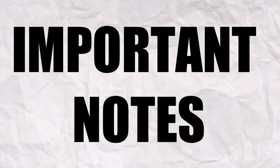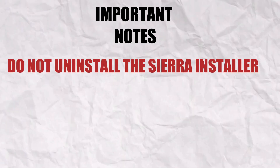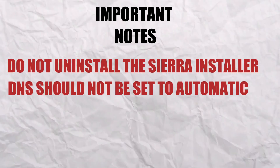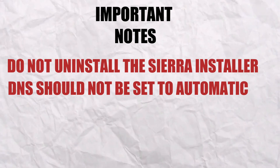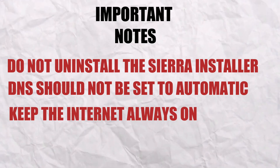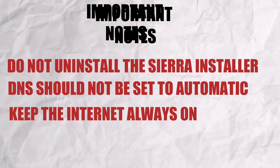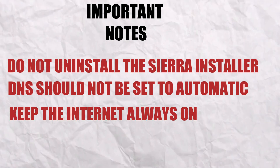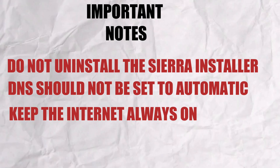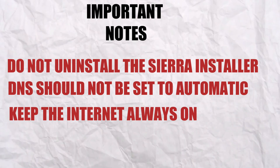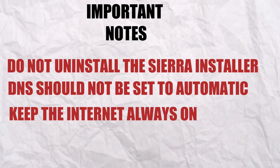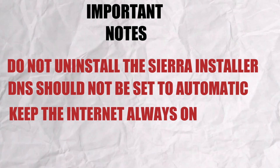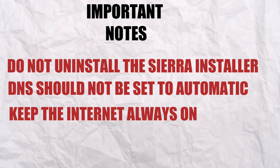A few important notes to take away from this video: Do not uninstall the Sierra Installer app. DNS should not be set to Automatic. You have to keep the internet always on, because when you disconnect and reconnect the internet, the DNS does not reconnect instantly — this time gap can cause the server to verify the certificate and blacklist it.